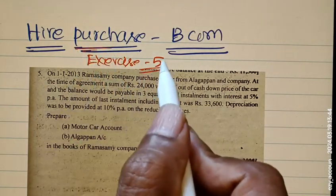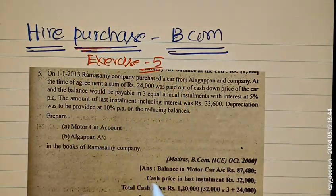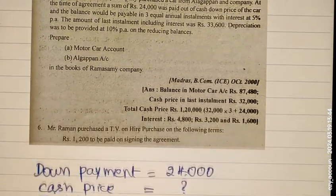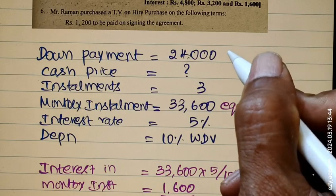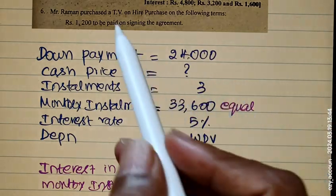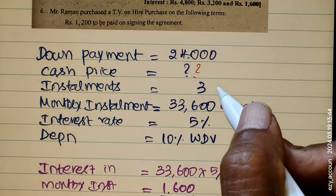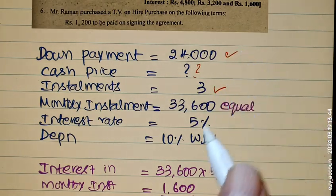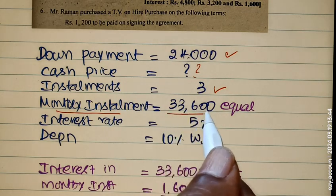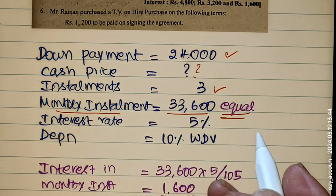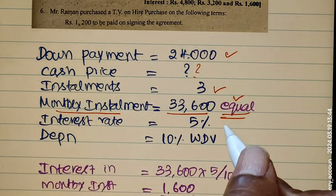Higher Purchase Accounting, Exercise 5. Question: at the end of the year, Down Payment is 24,000. We have to find out the installments — 3 monthly installments of 33,600 each, so every month the installment is the same amount. Interest rate is 5%.